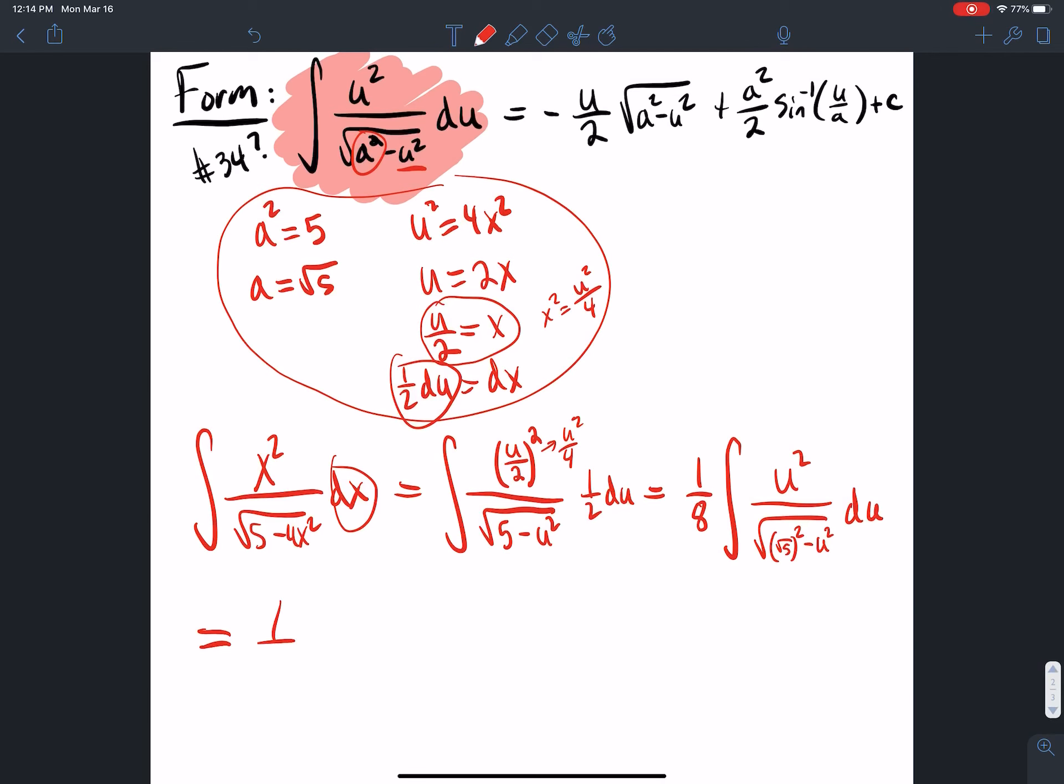So what does this look like? It's 1 eighth and then my formula says negative u over 2 square root a squared. Now what is a squared and what is u? u is 2x and square root, that's 5 square root. So a squared is 5 and then minus u squared is 4x squared plus a squared is 5 over 2 sine inverse u is 4x squared over a is 5.